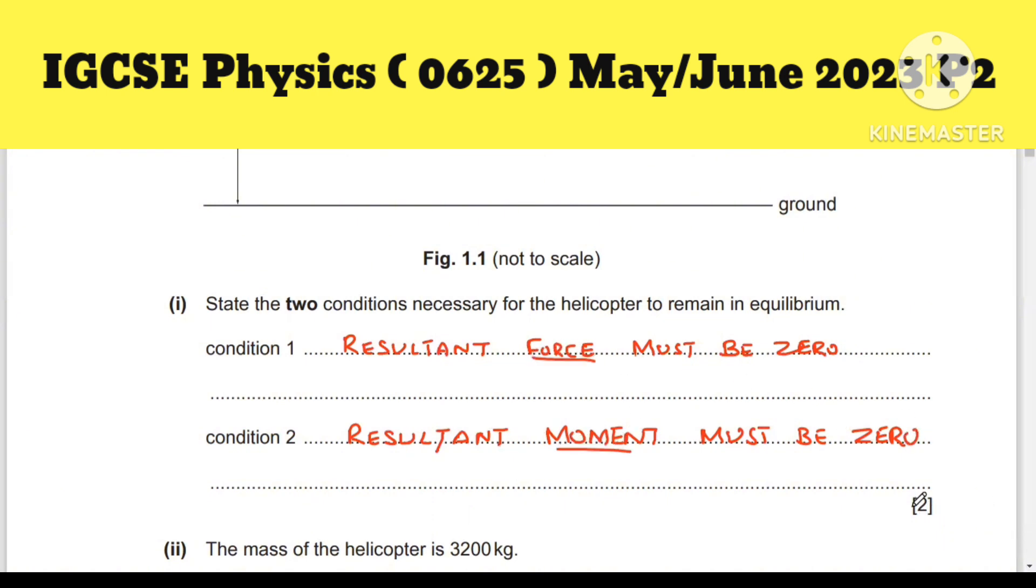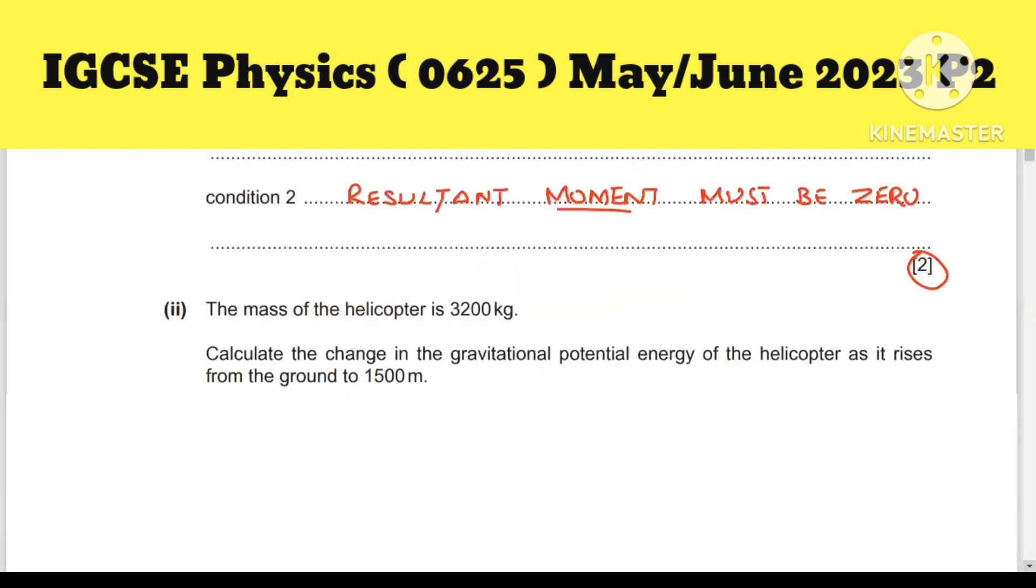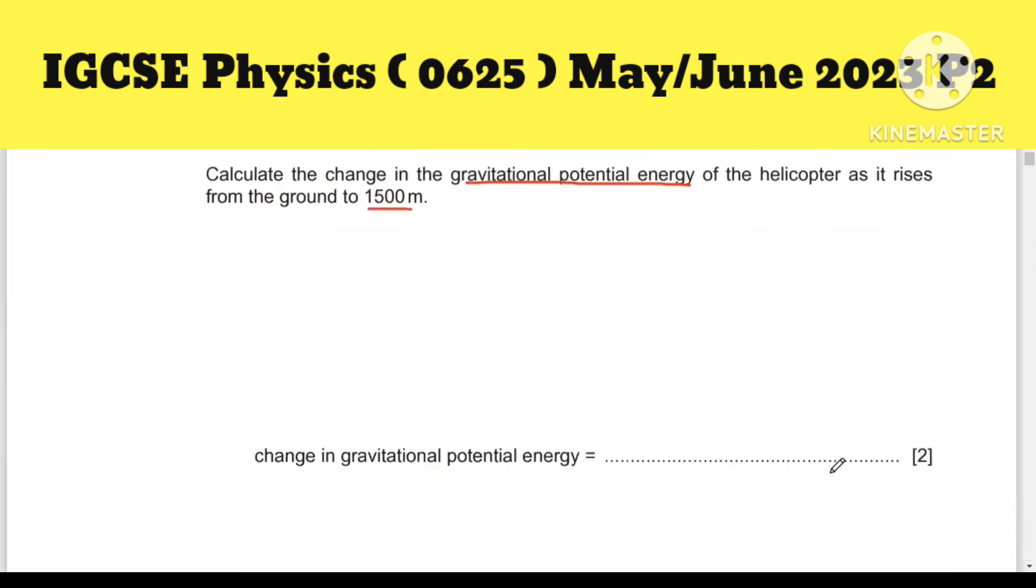Next question: the mass of the helicopter is 3200 kg. Calculate the change in gravitational potential energy. You have to find the gravitational potential energy of the helicopter as it rises to 1500 meters. When a body is at height, it has potential energy, so it is gravitational potential energy.